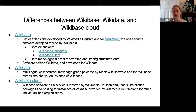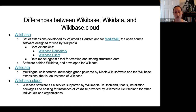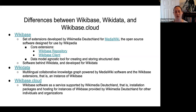Wikibase is the set of extensions developed by Wikimedia Deutschland for MediaWiki, the open source software designed for Wikipedia. Wikibase consists of two primary extensions — the Wikibase repository and the Wikibase client — though in practice it's almost always implemented with additional extensions, including the Wikidata query service. As software, it's a data model agnostic tool for creating and storing structured data. It doesn't come with any data model; you supply that through the creation of properties. It is also the software behind Wikidata, and Wikidata was the first instance of a Wikibase.